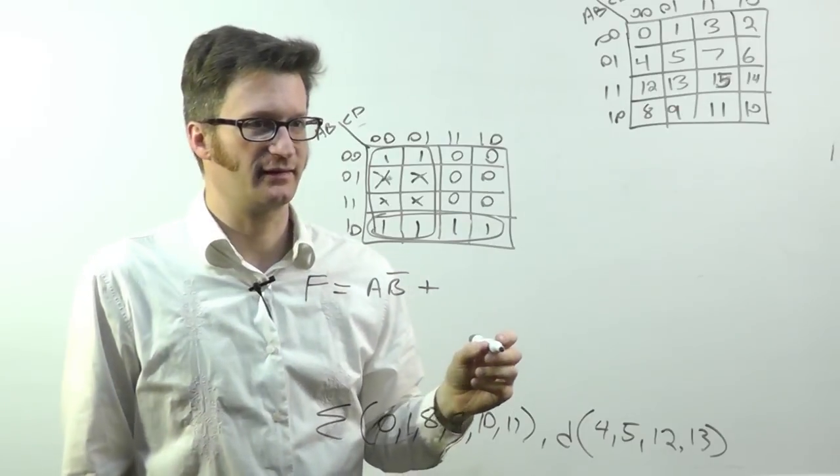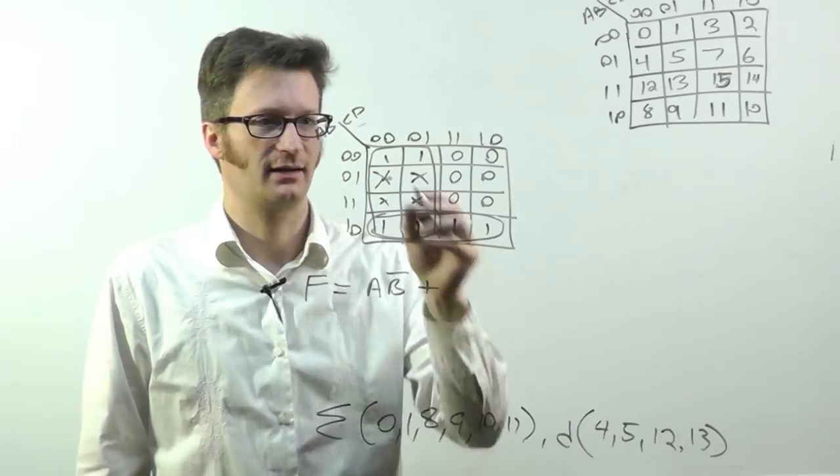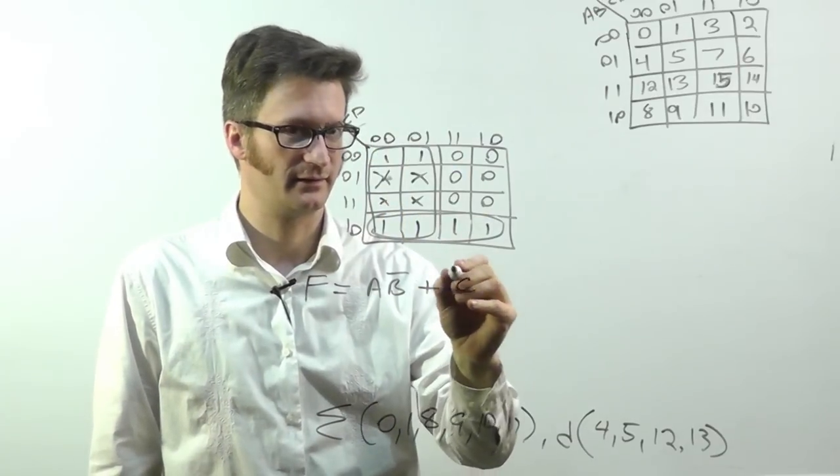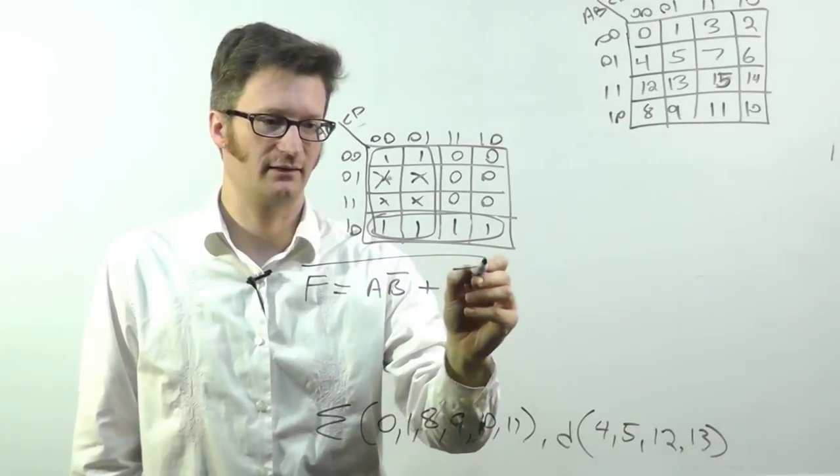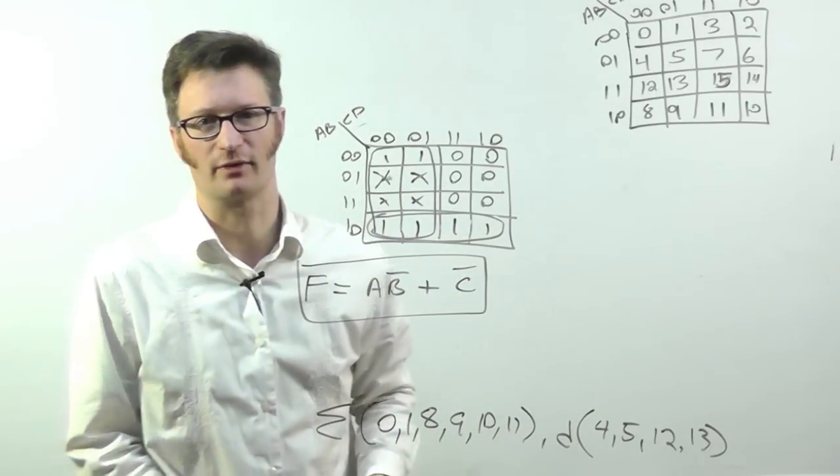In this case, I'm going to choose to have them all represent 1s. So in this case, I have in common C bar. And this is my minimized logic for that expression.